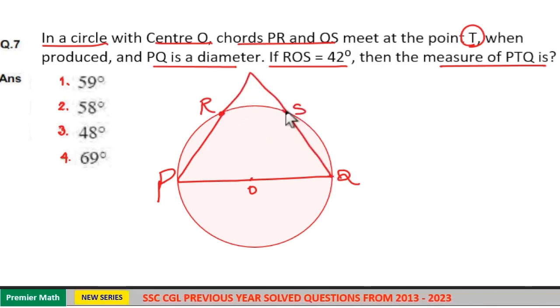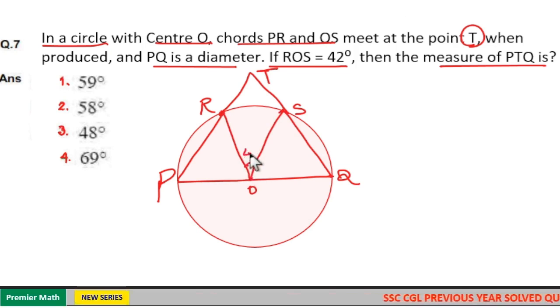Now these two chords meet at point T. This is point T and here angle ROS is 42 degrees. This angle is 42 degrees. Then we have to find out what is angle PTQ.